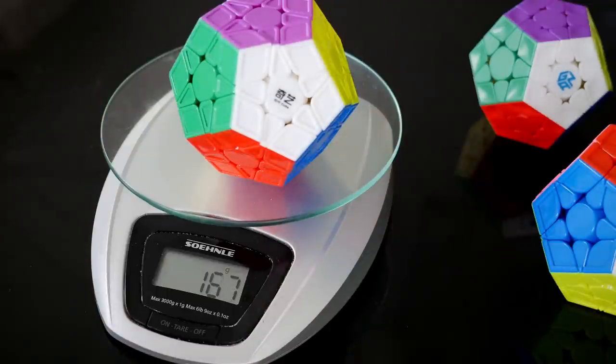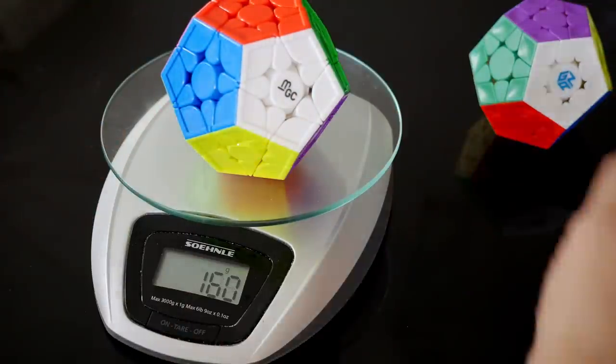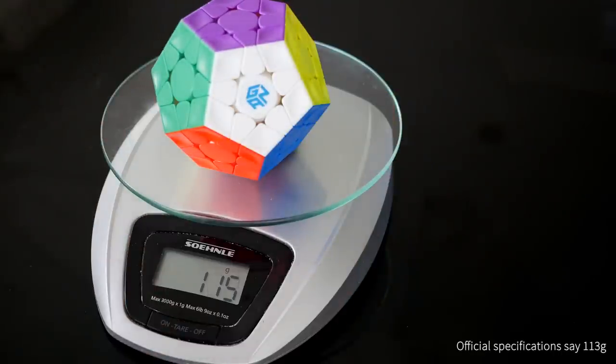My first Megaminx, the QiYi HuangS, my second, the YJ MGC Magnetic Megaminx, but the Garn comes in at a crazy 115 grams. That's even lighter than the Garn 4x4.